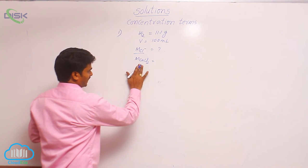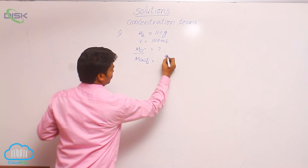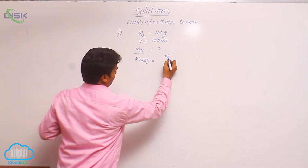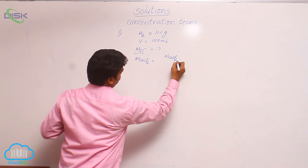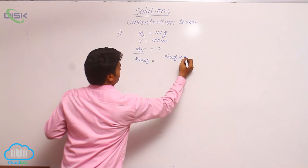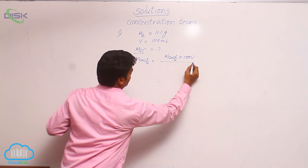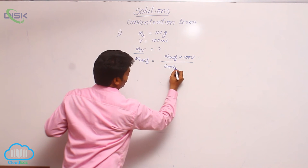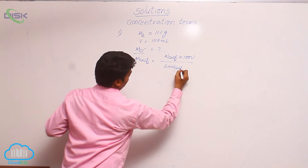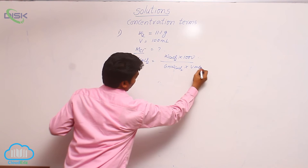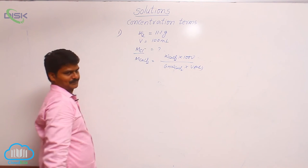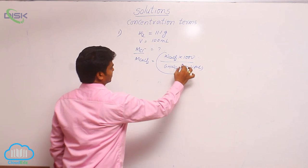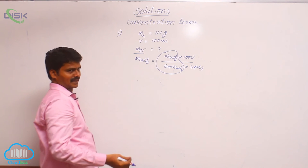Molarity of calcium chloride equals weight of calcium chloride CaCl2 times 1000 by gram molecular weight of calcium chloride into volume in ml. We can use this formula. But you know this term is nothing but the number of moles of calcium chloride.